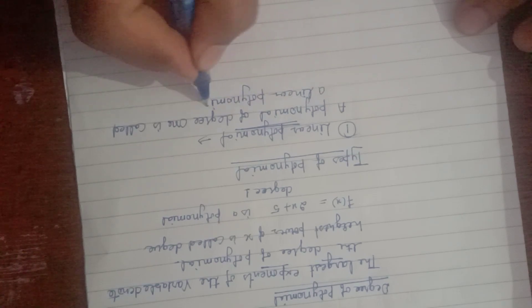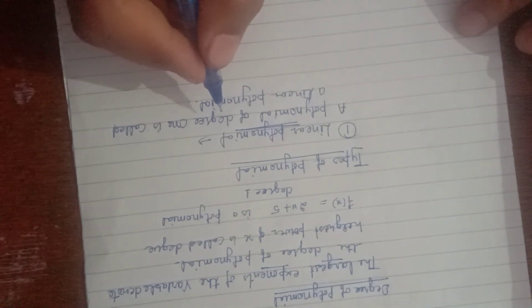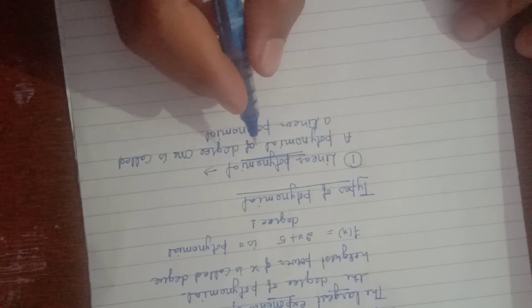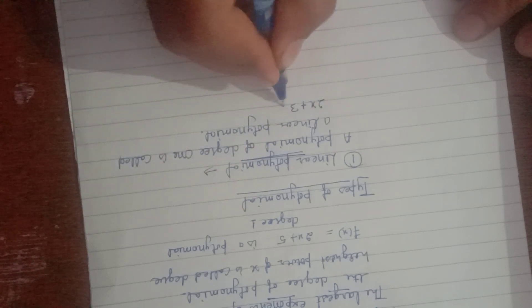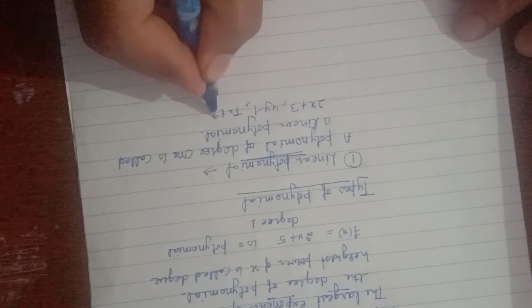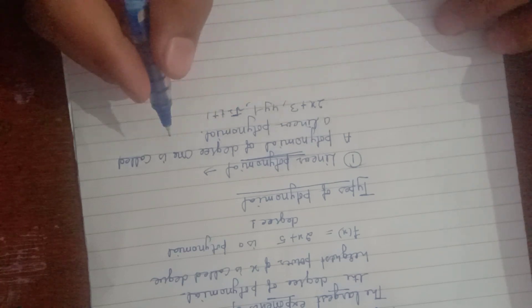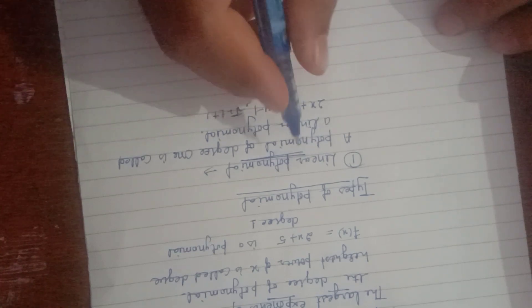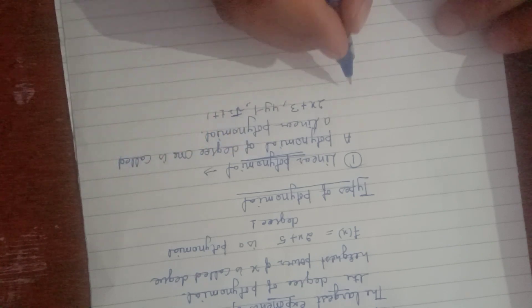When the polynomial of degree 1 is called a Linear Polynomial, examples include: 2x + 3, 4y − 1, √2·t + 1, and so on. There are infinitely many examples of Linear Polynomials. Clear, students?